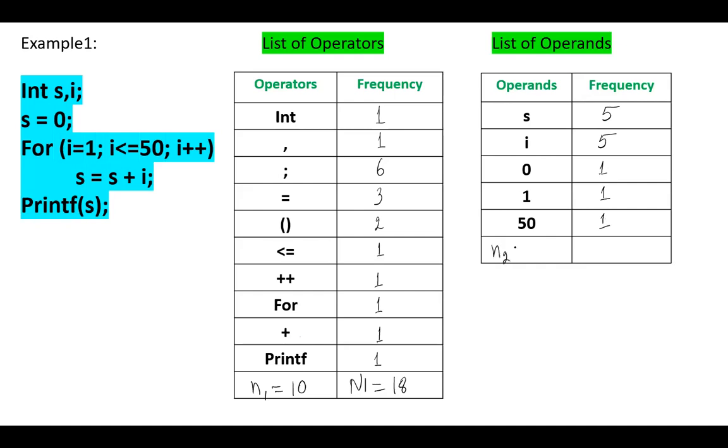So n2 equals, we have five operands, and capital N2 equals 10 plus 3, 13.